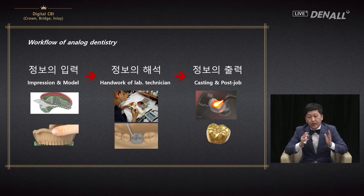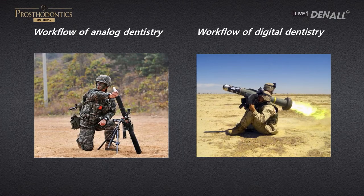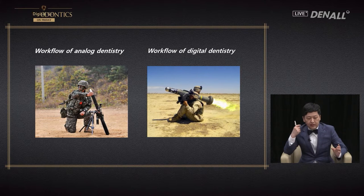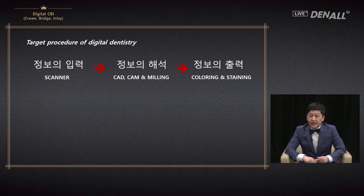I've thought long and hard about how to provide an intuitive visual comparison of analog and digital prosthesis. On the left is analog dentistry — the mortar — and on the right is digital dentistry — the missile. In war movies, a scout reports target position and the main camp shoots, but coordinates can be off and it falls in the wrong place. A smart missile, however, hits the target accurately via GPS. I believe digital prosthodontics has that kind of capability.